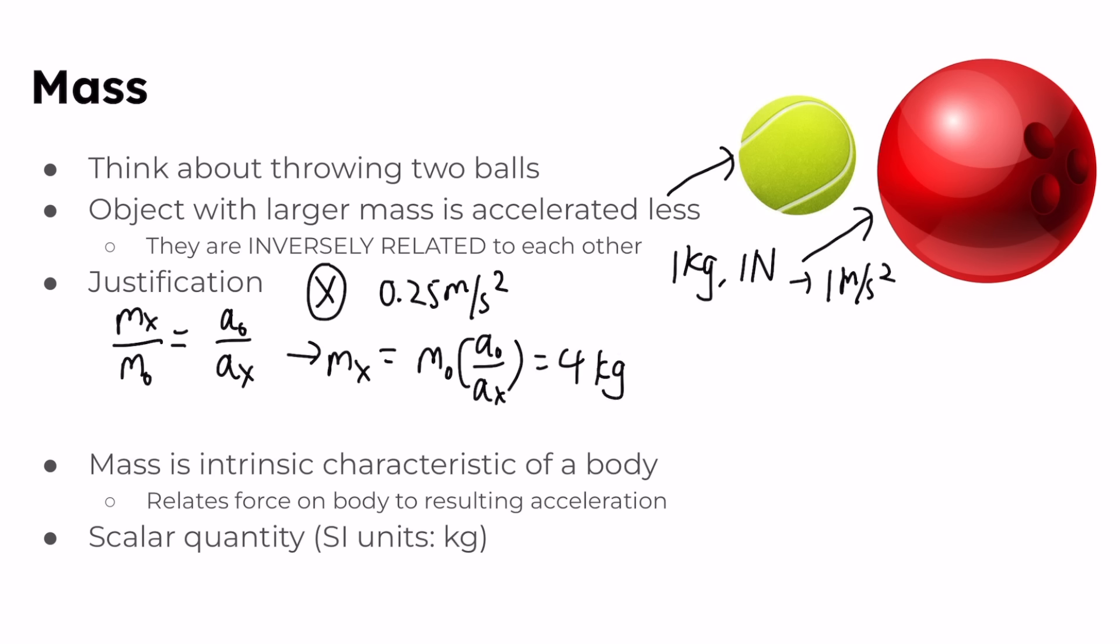Defining the mass of body x in this way is useful only if the procedure is consistent. So if we apply an 8 newton force first to the standard body instead of 1 newton, that will give us an acceleration of 8 meters per second squared. And then to body x we get an acceleration of 2 meters per second squared if we apply a force of 8 newtons. Then we would calculate the mass again using this relationship over here, and then we would in fact again get 1 kilogram times 8 meters per second squared over 2 meters per second squared, and that gives us again 4 kilograms, which means that this procedure is in fact consistent and usable.